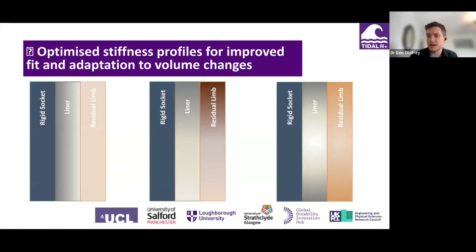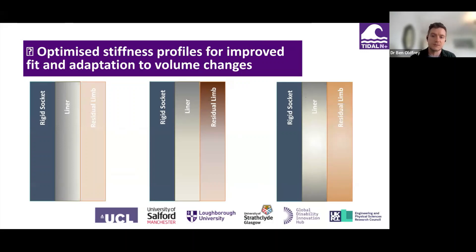Additive manufacturing now allows us to think about these things with multi-material printing — structurally complex products that we couldn't previously create. We're really interested in whether we can incorporate these ideas into the technology for the stump-socket interface, potentially making bespoke optimized material properties across the interface that could be created for the varying tissues of the residual limb.